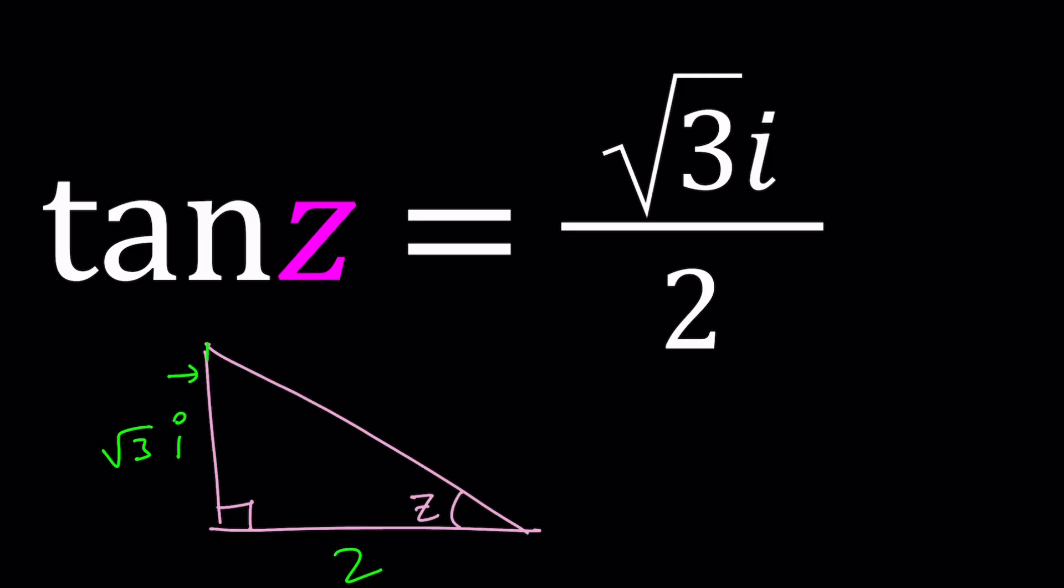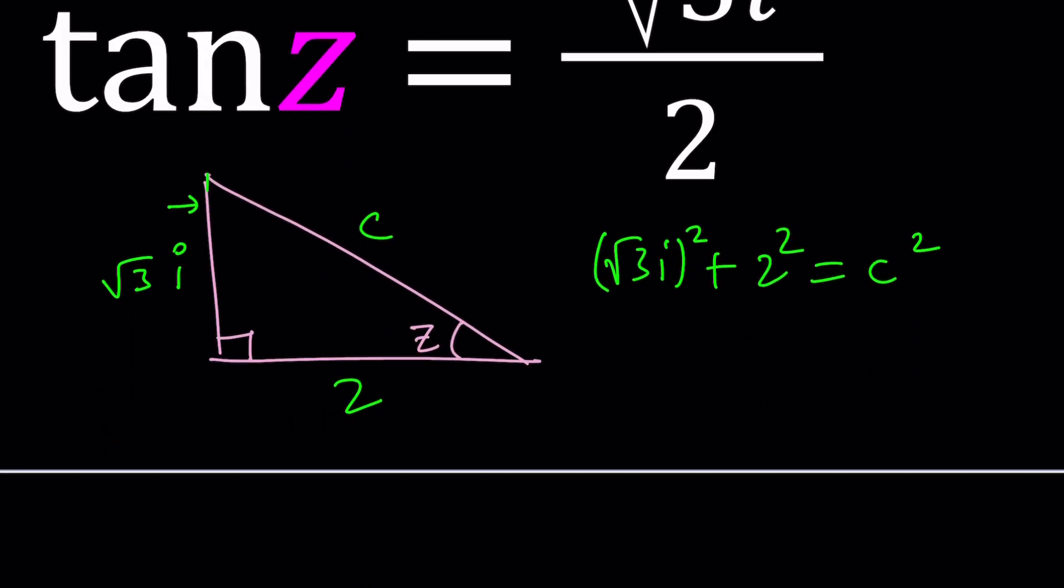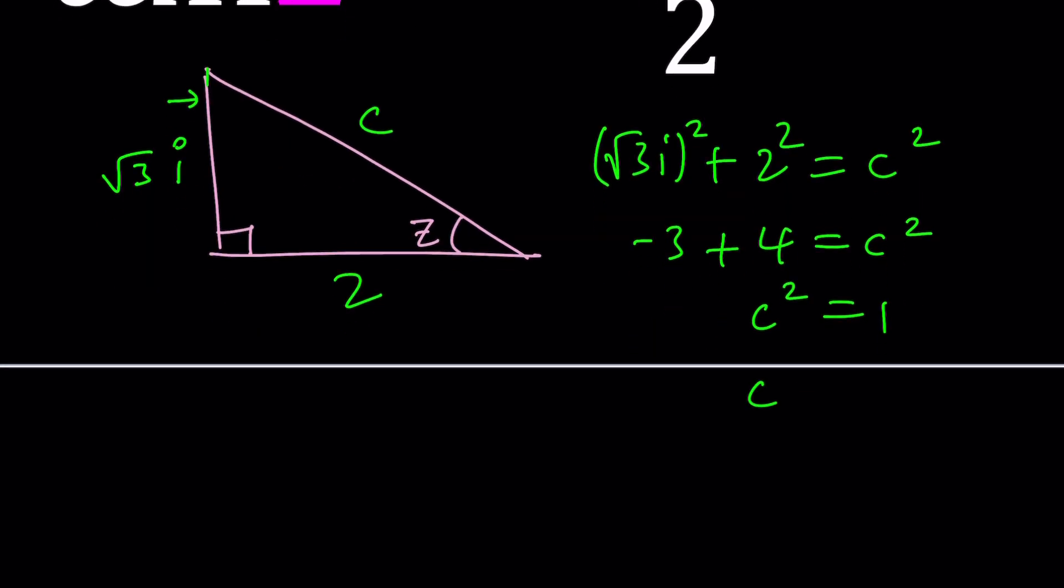To find the hypotenuse here, we're going to call this c. a squared plus b squared equals c squared. What is square root of 3i squared? That is 3i squared, which is negative 3. Plus 2 squared is 4, and from here we get c squared equals 1, which gives us a real value. So c is real, can you imagine? The problem is the hypotenuse is supposed to be the longest side. In this case, it isn't. Too bad because complex numbers are involved.